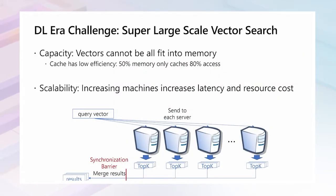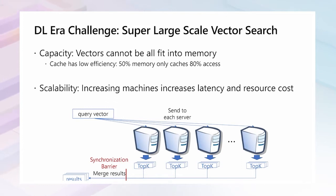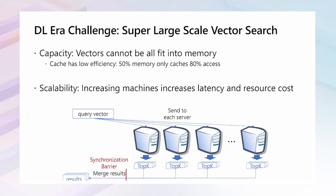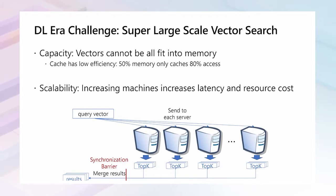With the recent breakthrough in deep learning, content can be more meaningfully represented by vectors — not only multimedia materials, but also natural language materials. Vector search is now playing a more and more important role in deep information retrieval. With the rapid growth of vector scale in the deep learning area, a challenge arises: how can we serve super large scale vector search, for example, hundreds of billions scale in production?